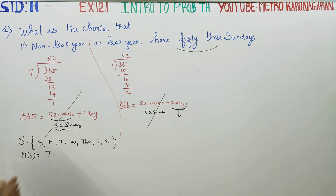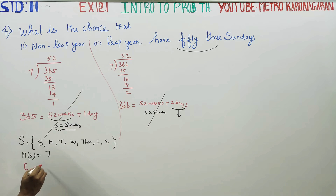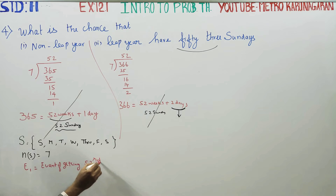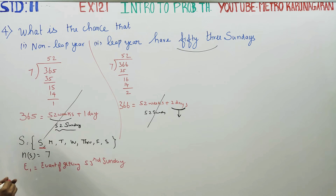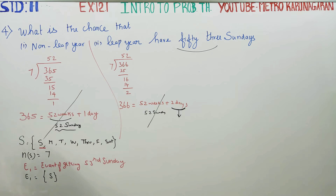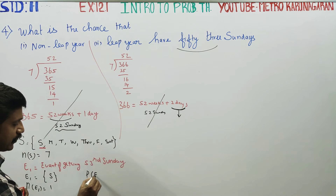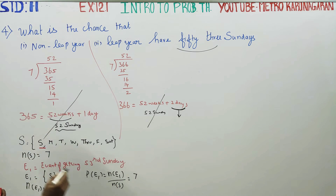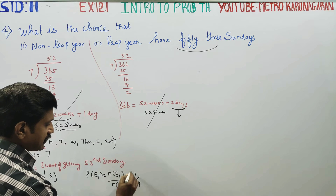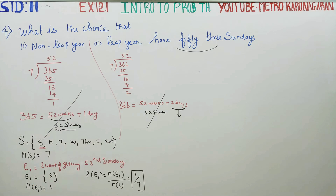Event E1 is defined as the event of getting a 53rd Sunday. For a non-leap year, the extra day must be a Sunday. So N(E1) = 1, and the probability P(E1) = 1/7. This is the answer for the non-leap year.